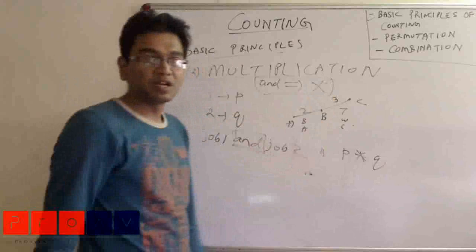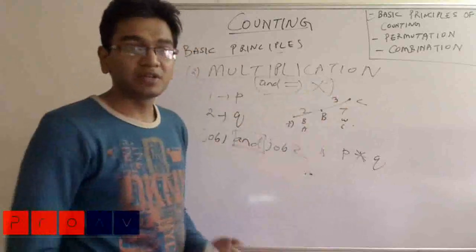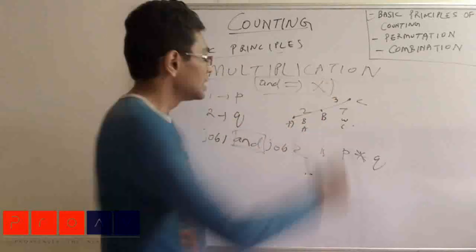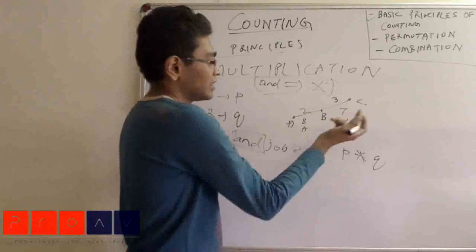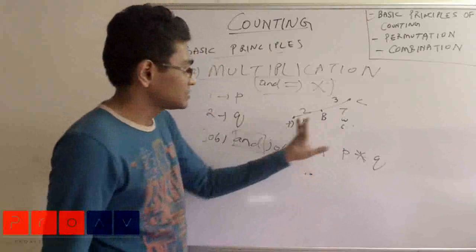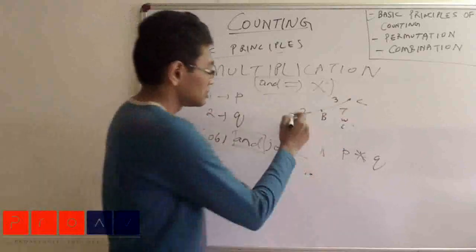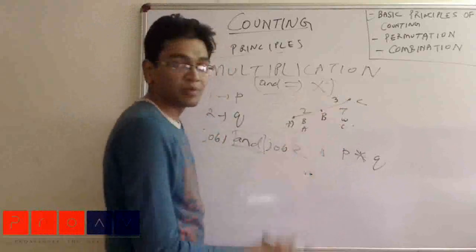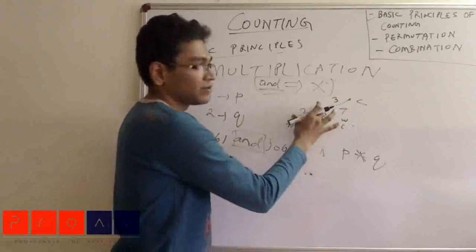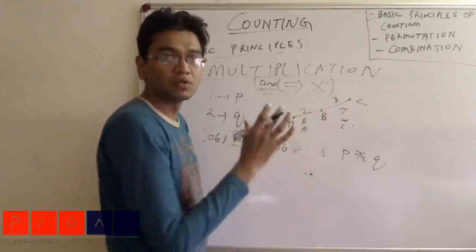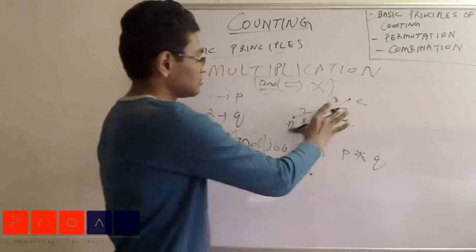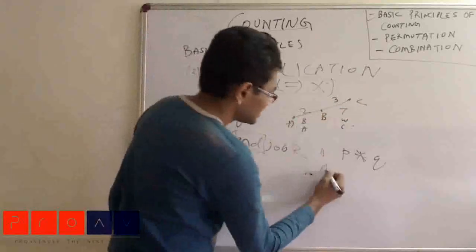Let us take a simple example. Suppose I am at place A — from A to B I can go by two ways: by bus and by auto. From B to C I can go by three ways. If I ask what is the number of ways in which I can go from A to C, to go from A to C I have to first go from A to B and then from B to C — it is essentially the word 'and'. The number of ways from A to B is two and from B to C is three, so the total is six.